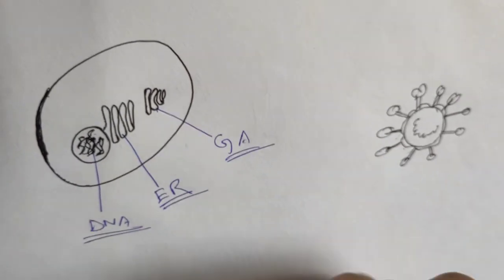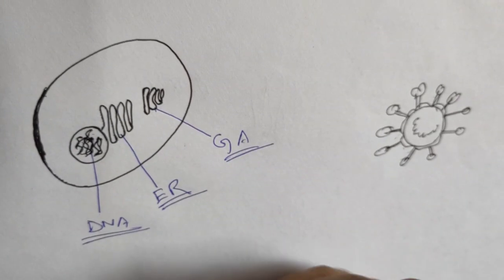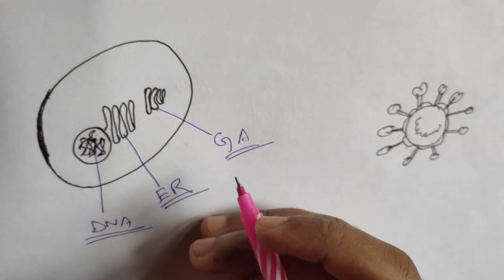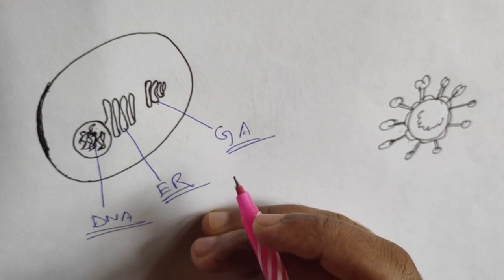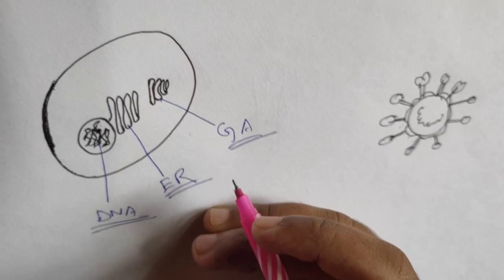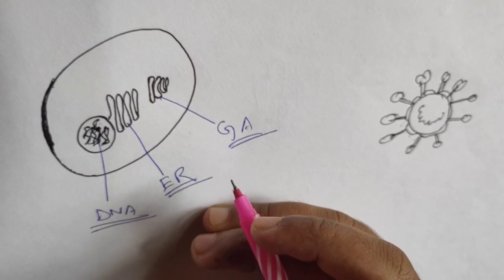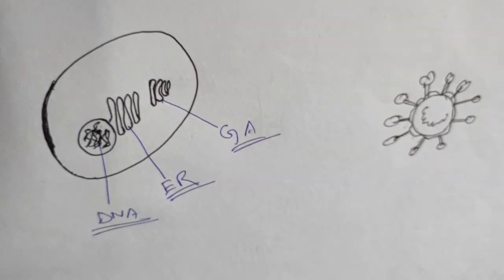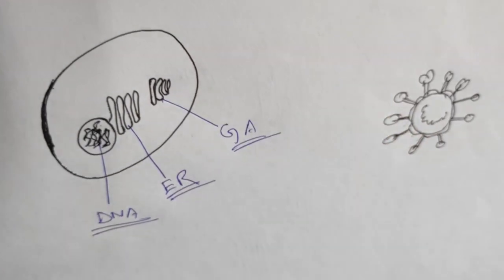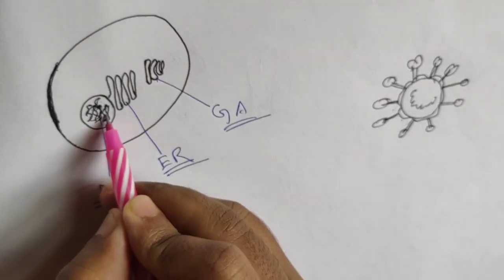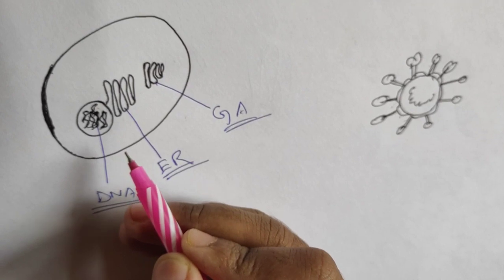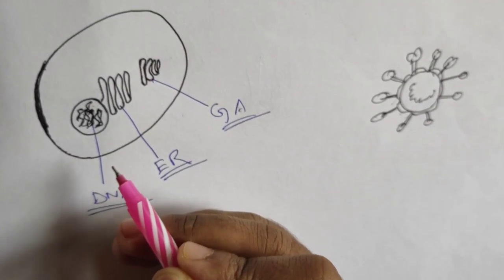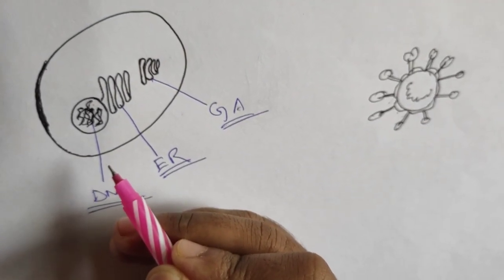Why are we talking about protein? Basically, whatever we see here — skin, every cell — most components are made up of protein. Without protein, we cannot function. This DNA, this genetic material, contains the information to form different types of proteins for different types of functions.